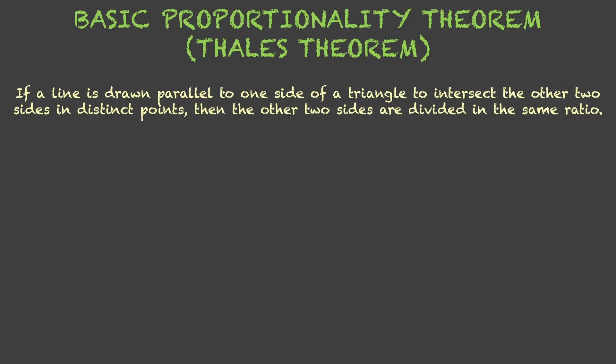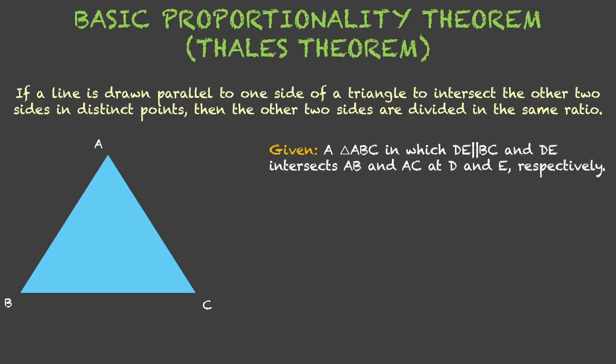Now, although we practically saw this, let us try to prove it theoretically, mathematically. So, what is given to us is a triangle ABC in which DE is parallel to BC. D is a point on AB and E is a point on AC. We need to prove that AD upon DB is equal to AE upon EC.